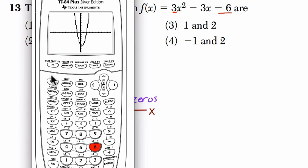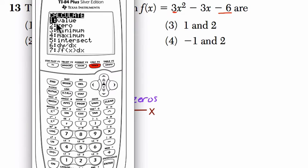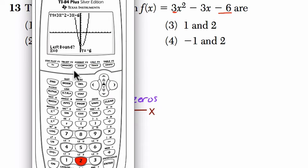So here we're looking for the zeros. If you press second, trace, choice 2 is for zeros. And all you have to do is go to the left and the right of your estimation of where the points are. So my cursor to the left, a little bit of our first root, enter. Then to the right, or below in this case, the root. And it will ask us to guess. And there's our first root. When x is -1, y is 0. That's our first root.